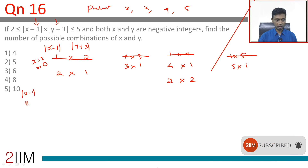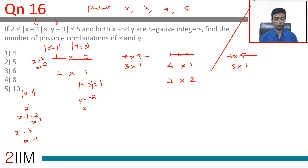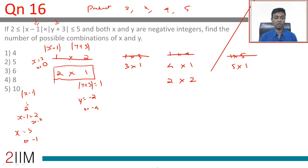If |x-1| = 2, then x-1 = 2 or -2, so x = 3 or x = -1. Since x must be a negative integer, x = -1. Now for |y+3| = 1: y+3 = 1 or -1, giving y = -2 or y = -4. Both are negative integers — 2 possibilities. So we have (-1, -2) and (-1, -4).